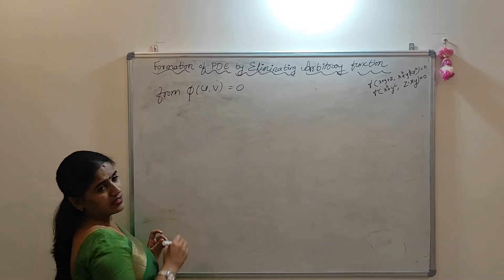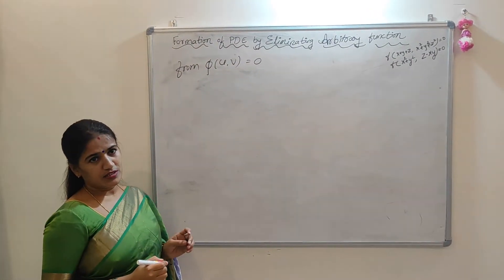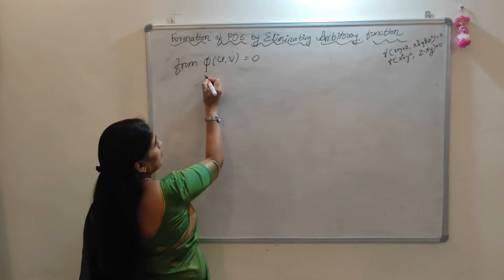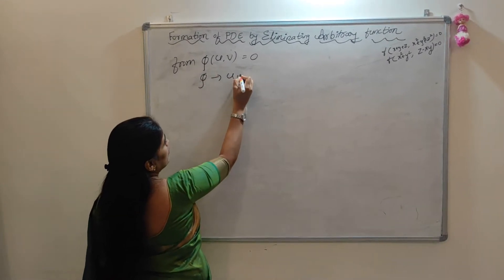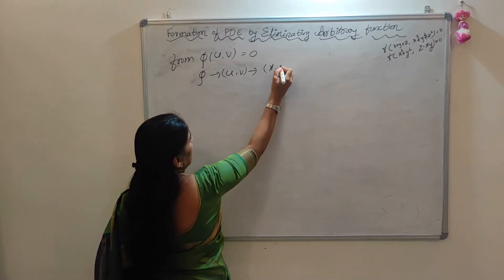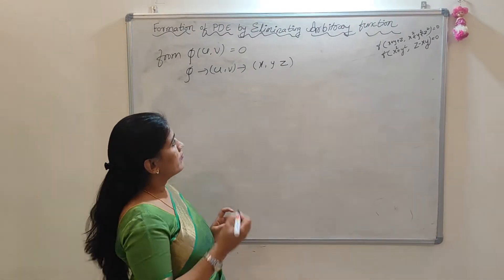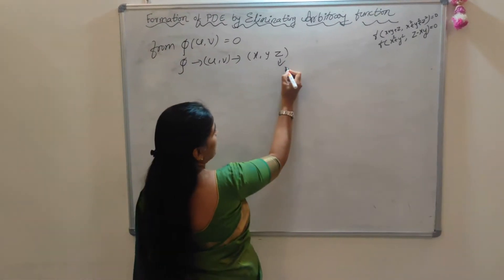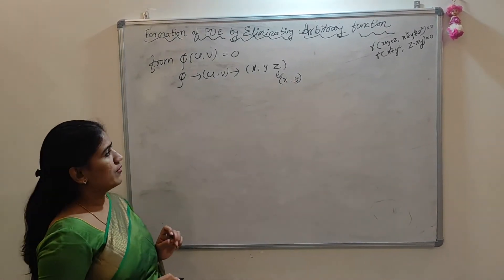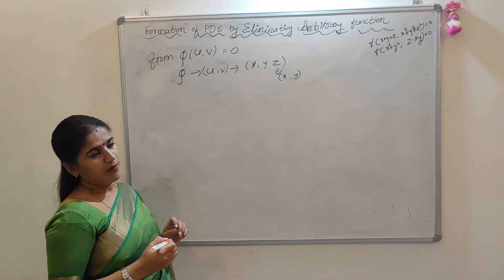In this case, how can we find the partial differential equation by eliminating the function? Here phi is a function of u and v, and u and v are functions of x, y, z. Here z is the dependent variable, z is a function of x and y only. So here we use the chain rule.